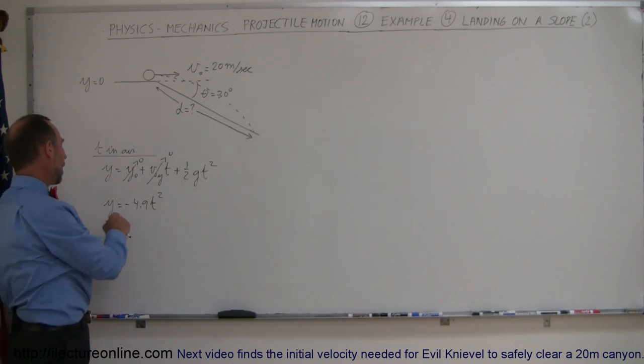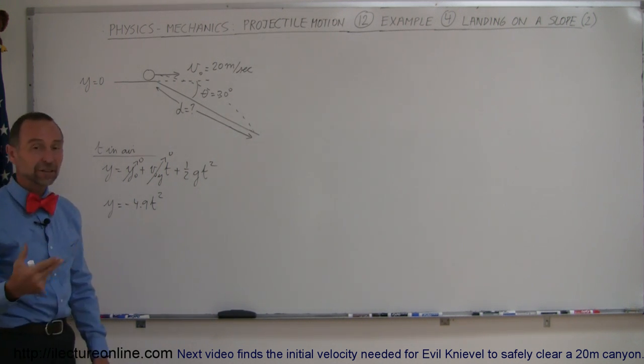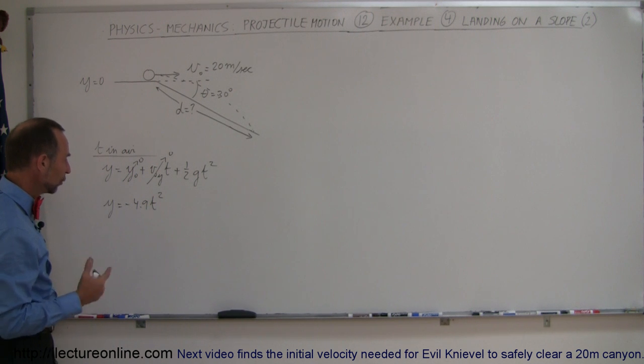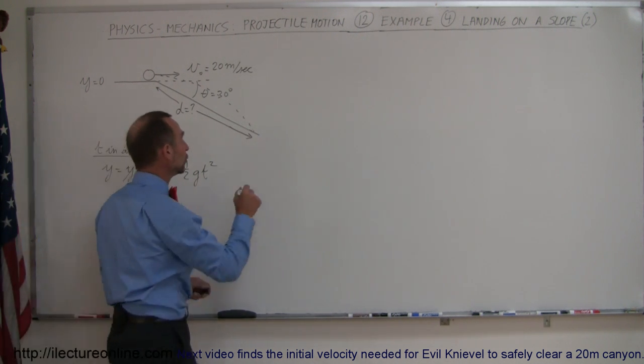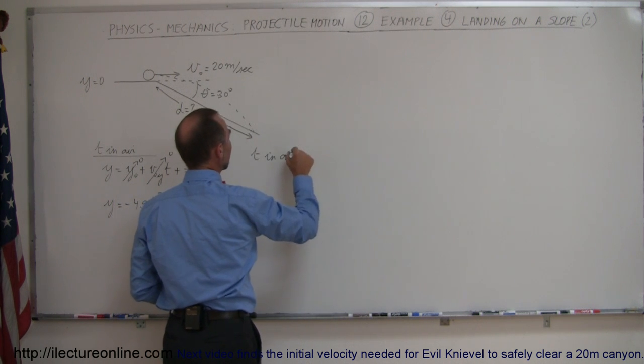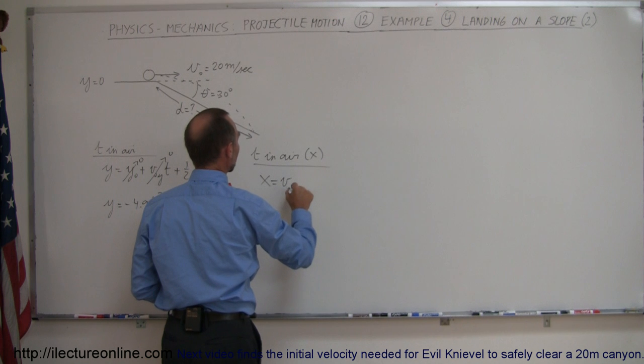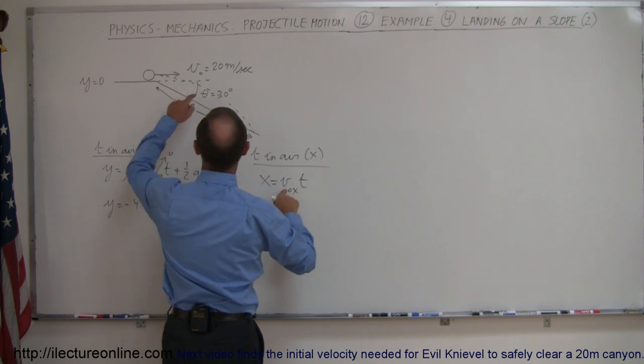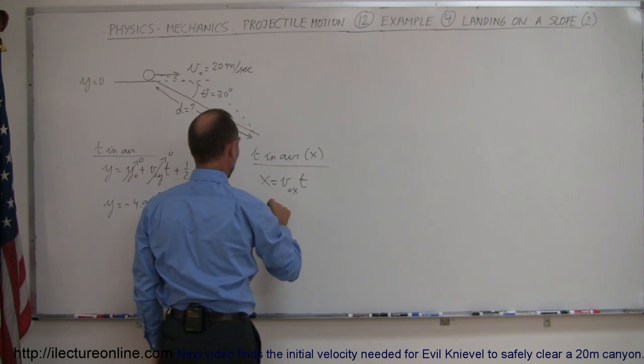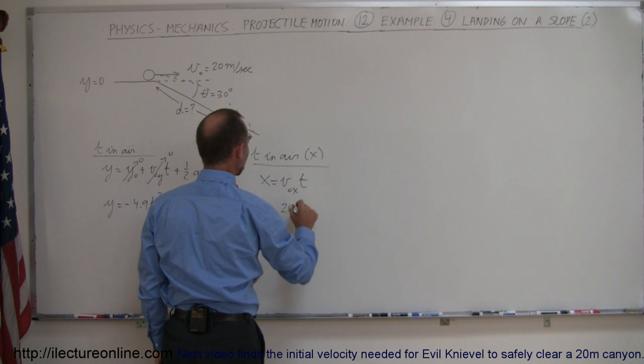Now, since I don't know what y is because we don't know how far down the incline it will land, and I don't know what t is, we can't solve for t in this equation, so we need a second equation. We'll use time in the air in the x direction, and that of course is x is equal to v initial in the x direction times time. v initial in the x direction is 20, so we have x is equal to 20 times t.